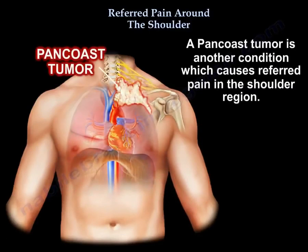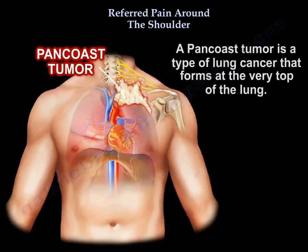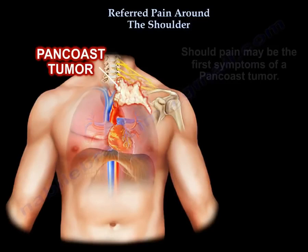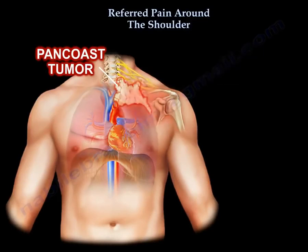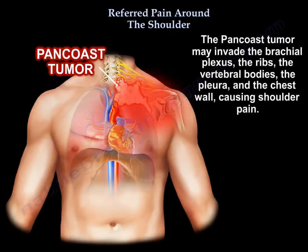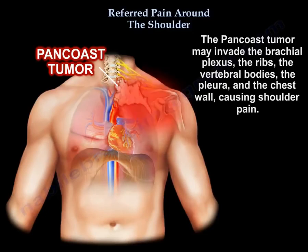Pancoast tumor is another condition which causes referred pain in the shoulder region. It is a type of lung cancer that forms at the very top of the lung, and shoulder pain may be the first symptom. The tumor may invade the brachial plexus, the ribs, the vertebral bodies, the pleura, and the chest wall, causing shoulder pain.